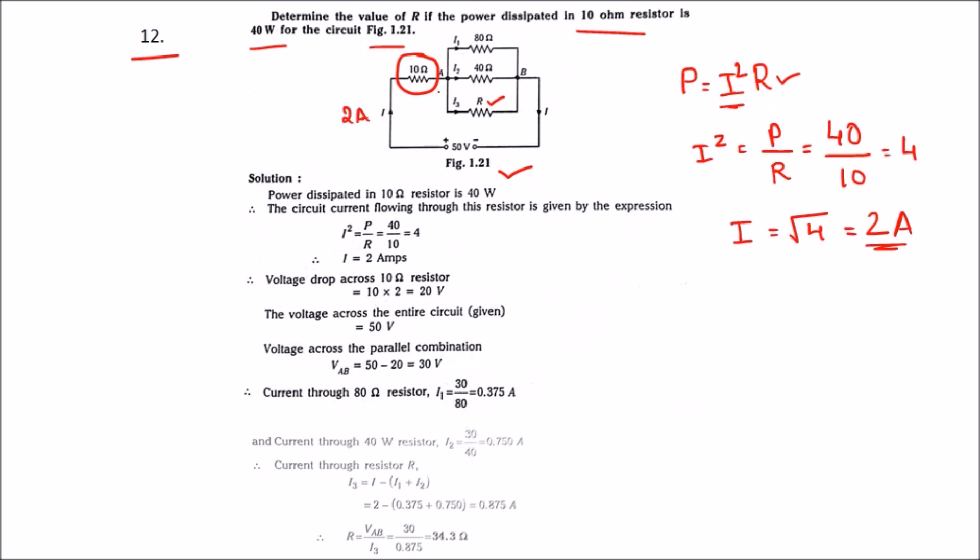Let us find the voltage across this resistance. Let us call V1 and let us call this voltage as V2. As we know the supply voltage is 50, let us calculate V1 is equal to 2 into 10 that is 20 volts. We got the value of 20 volts.